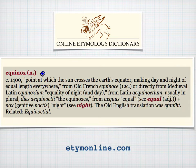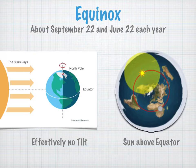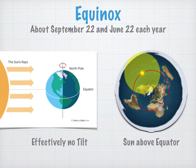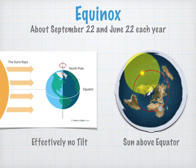The word equinox comes from around 1400, and it comes from the Latin, meaning equal night. On the globe-earth model, on the equinox, there is effectively no tilt to the Earth's axis, whereas on the flat-earth model, the Sun simply follows a circuit above the equator.